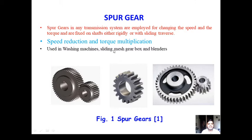Spur gears are straight in nature, as we can see from the figures. They are basically used in washing machines, sliding mesh gearboxes, blenders, and many more applications based on their requirement. The prime importance is to multiply the torque as per the requirement of the vehicle.